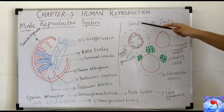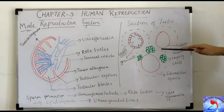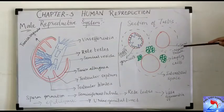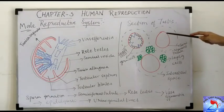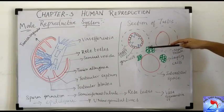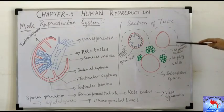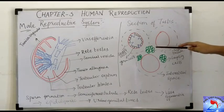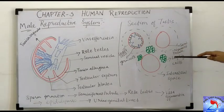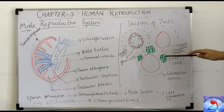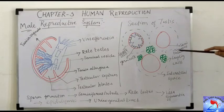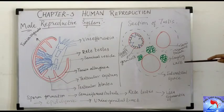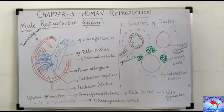Looking at the cross-section of the testis, we can see the seminiferous tubules as large structures surrounded by interstitial spaces. In these interstitial spaces there are blood capillaries and a mass of tissue called interstitial tissue or Leydig cells. Because they are present in the interstitial space, they are called interstitial cells, also known as Leydig cells. These Leydig cells secrete testosterone, which is the male hormone.